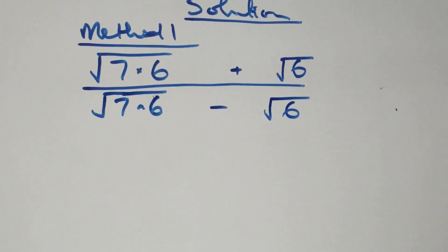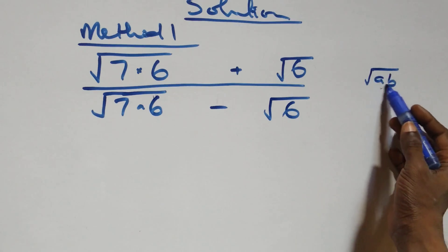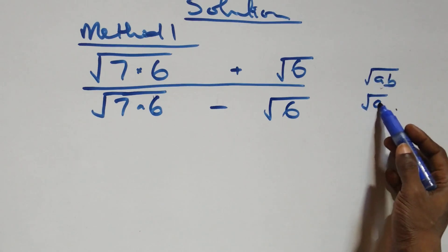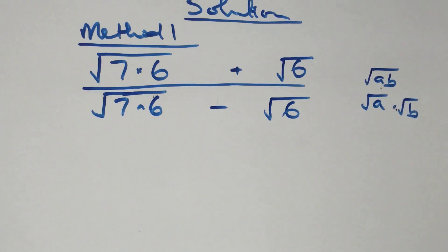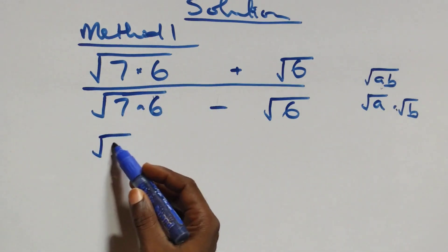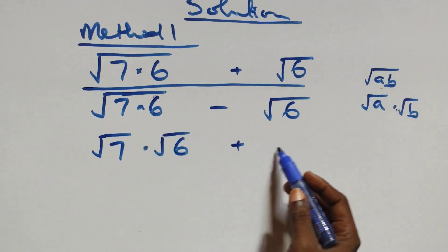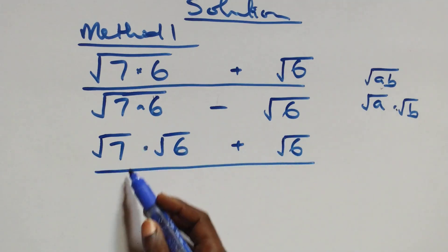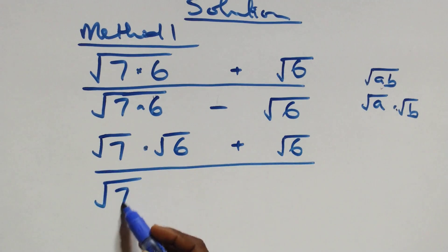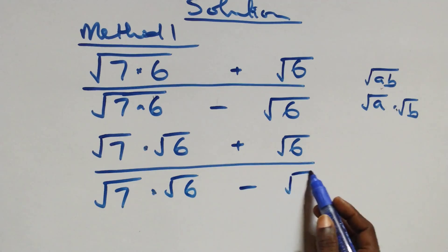This follows from the rule that √(a×b) = √a × √b. Applying this, the numerator becomes √7 × √6 + √6, and the denominator becomes √7 × √6 − √6.